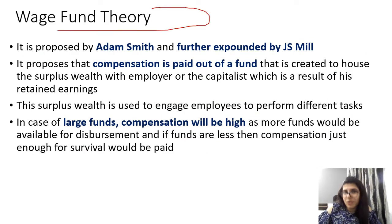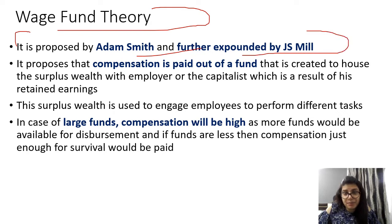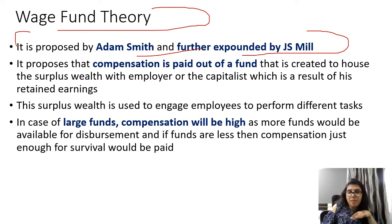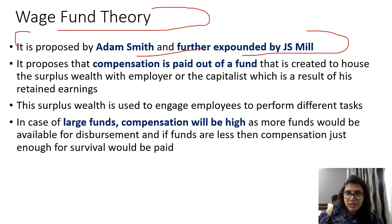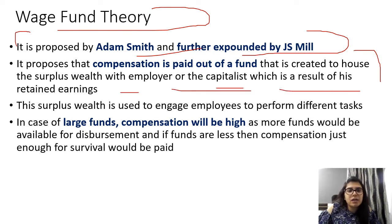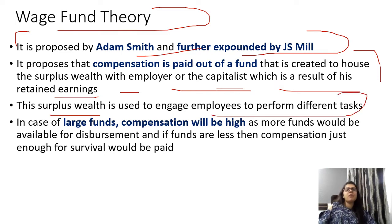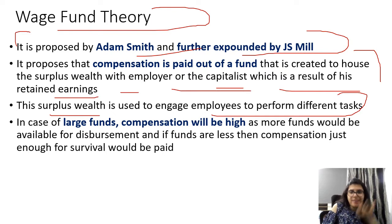Now let's study the Wage Fund Theory. It is proposed by Adam Smith and further expounded by J.S. Mill. Two people are associated with this theory. If you have to match the following, match with one of them. This theory proposes that compensation is paid out of a fund created to house the surplus wealth with the employer or capitalist, which is a result of retained earnings. This surplus wealth is used to engage employees to perform different tasks.